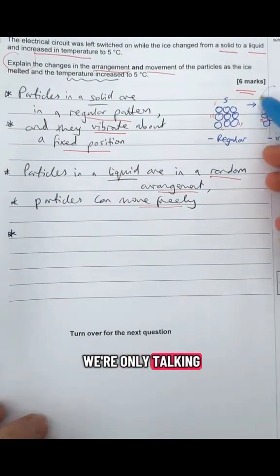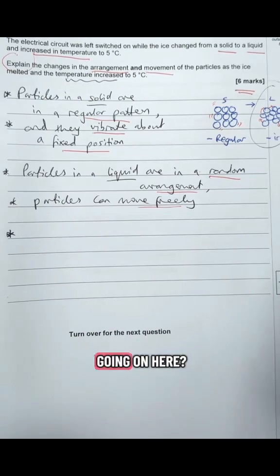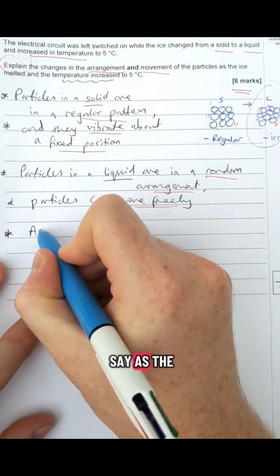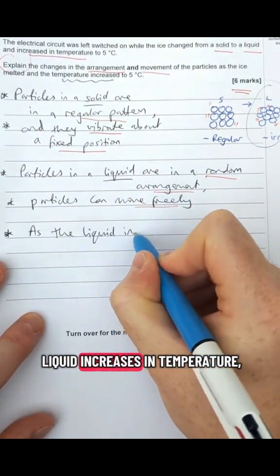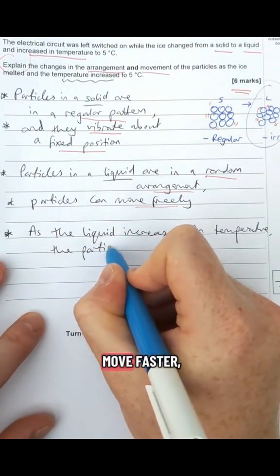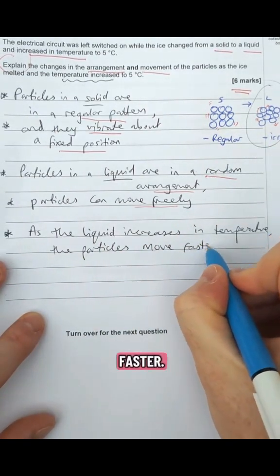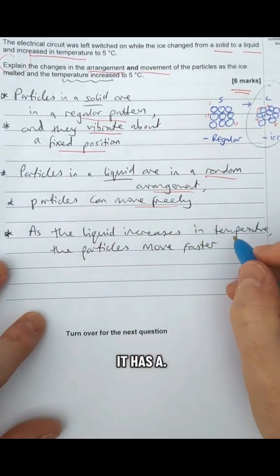At five degrees it's no longer a solid - we're only talking about the state of being a liquid. So you can say as the liquid increases in temperature, the particles move faster. They do not vibrate because they're liquid, but they move faster. You could say it has a higher kinetic energy.